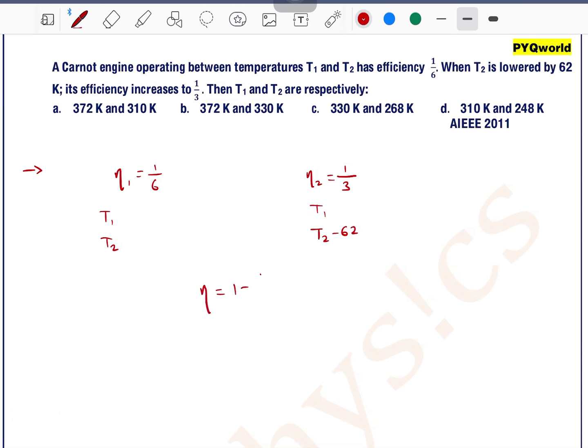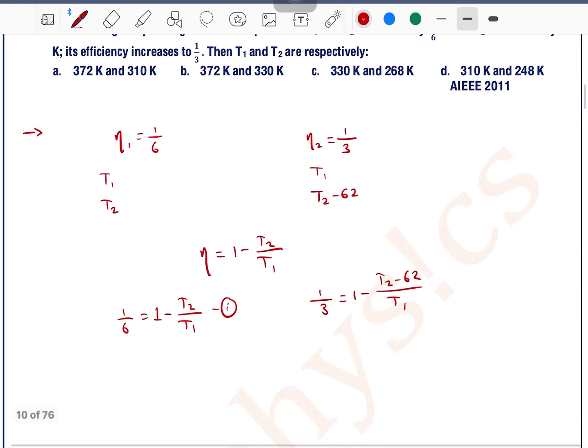In that case, T1 and T2 are. Let's solve this. We know that efficiency of a heat engine can be written as 1 minus T2 by T1. So from the first data, we can write 1 by 6 is equal to 1 minus T2 by T1. Let's say this is equation number 1.